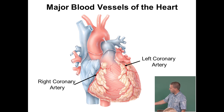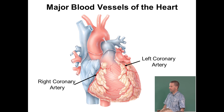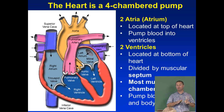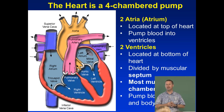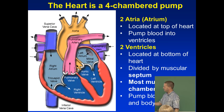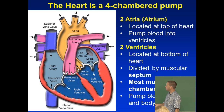The pointy part of the heart is called the apex. The heart is a four-chambered pump made up of two atria and two ventricles. The ventricles are divided by the ventricular septum.